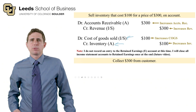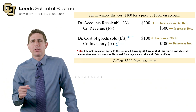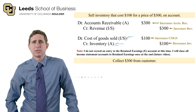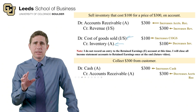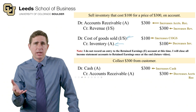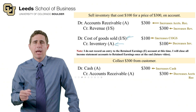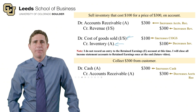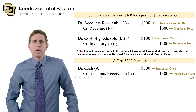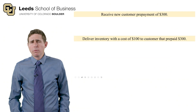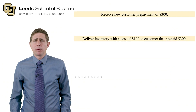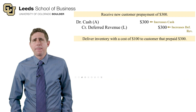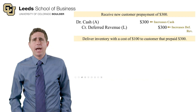Now we're collecting $300 from that customer, collecting on the accounts receivable. We reduce accounts receivable — since they no longer owe us money — with a credit. And we're receiving cash, so we increase cash with a debit. For the next transaction, we receive a new customer prepayment of $300. Cash is going up, so we increase cash with a debit.